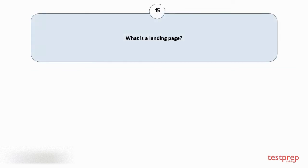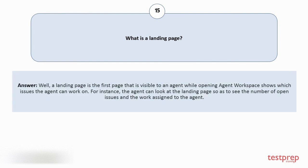Question number 15: What is a landing page? A landing page is the first page that is visible to an agent while opening agent workspace, showing which issues the agent can work on. For instance, the agent can look at the landing page so as to see the number of open issues and the work assigned to the agent.